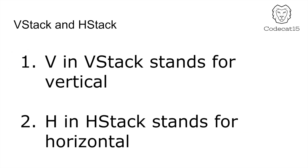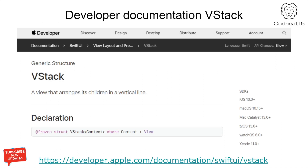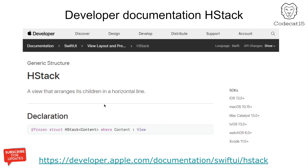The V in VStack stands for vertical and the H in HStack stands for horizontal. So if you look at Apple's developer documentation, the definition of VStack is a view that arranges its children in a vertical line. And the definition of HStack is a view that arranges its children in a horizontal line.